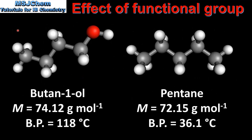The next factor is the effect of the functional group. Here we can see two organic compounds: on the left, butan-1-ol, and on the right, pentane. Both compounds have similar molar masses. However, the boiling point of butan-1-ol is higher than that of pentane. Pentane belongs to the alkane homologous series and is a non-polar molecule. Butan-1-ol is an alcohol with a hydroxyl functional group, so alcohols are able to form hydrogen bonds between their molecules, whereas alkanes such as pentane only have weaker London dispersion forces. The higher boiling point of butan-1-ol is due to its stronger intermolecular forces.